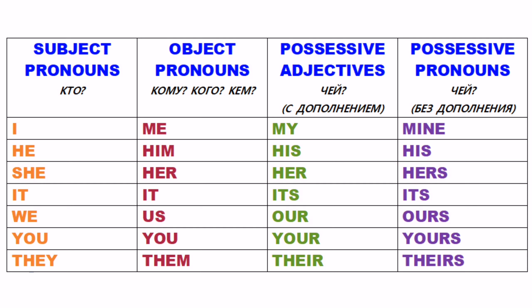Обратите внимание: в четвёртой колонке всё просто. Там только слово mine вообще отличается от слова my. Все остальные слова похожи на предыдущую колонку — там просто добавляется s, где её не было. Например, her — добавляется s, получается hers. 'It's hers' — «это её». 'It's ours' — «это наше». 'It's yours' — «это ваше». 'It's theirs' — «это их». Если вы сказали my, обязательно должно следовать дополнение: 'it's my book'. Если просто «это моё» — 'it's mine'.